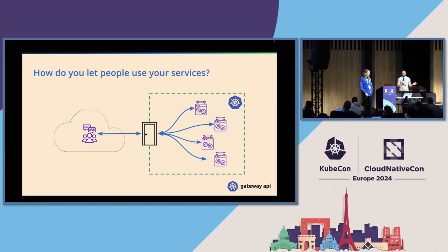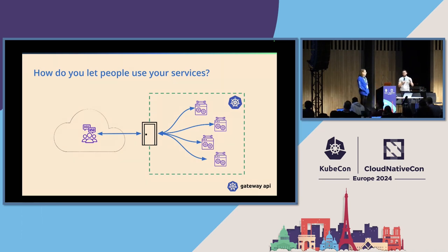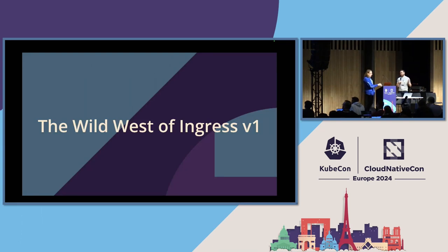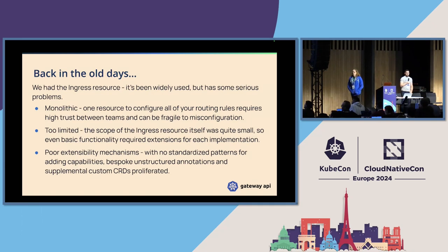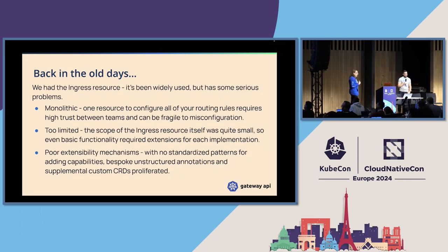We tend to solve this by putting something right on the edge of the cluster whose purpose in life is to provide control over who can get through that boundary. We refer to this as an Ingress controller, or in Gateway API terms a gateway controller, since Gateway API uses gateways as opposed to the old Ingress resource. Terminology can be confusing — we'll try to be explicit when disambiguating between lowercase ingress as a concept versus the capital-I Ingress v1 Kubernetes API.